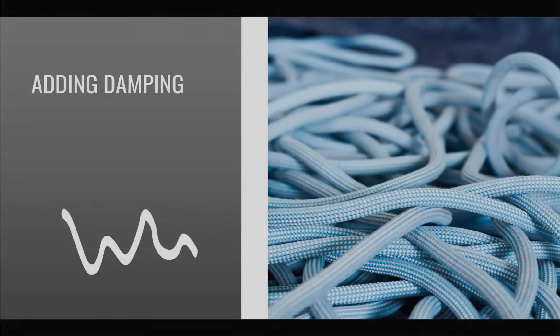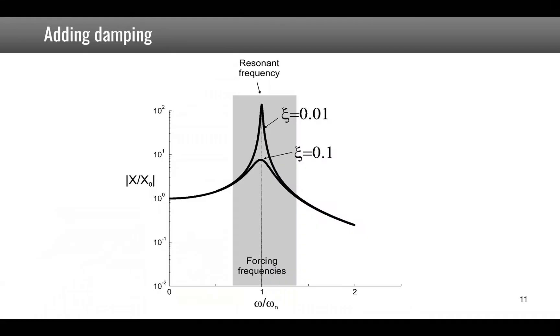Using high or low tuning to stay away from resonance is not always possible. In the case where you cannot avoid the matching of forcing frequencies with the structure's resonance, another possibility is to add damping. As shown here, if you multiply the damping by 10, the amplitude at resonance will be divided by 10.